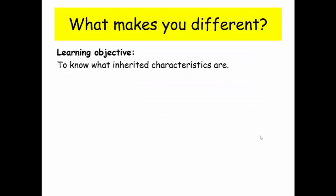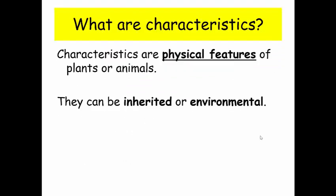We're going to be looking as a main objective at what inherited characteristics are. Now characteristics are physical features of plants or animals and they can be inherited coming from your parents or environmental coming from your surroundings and the decisions that you choose to make.